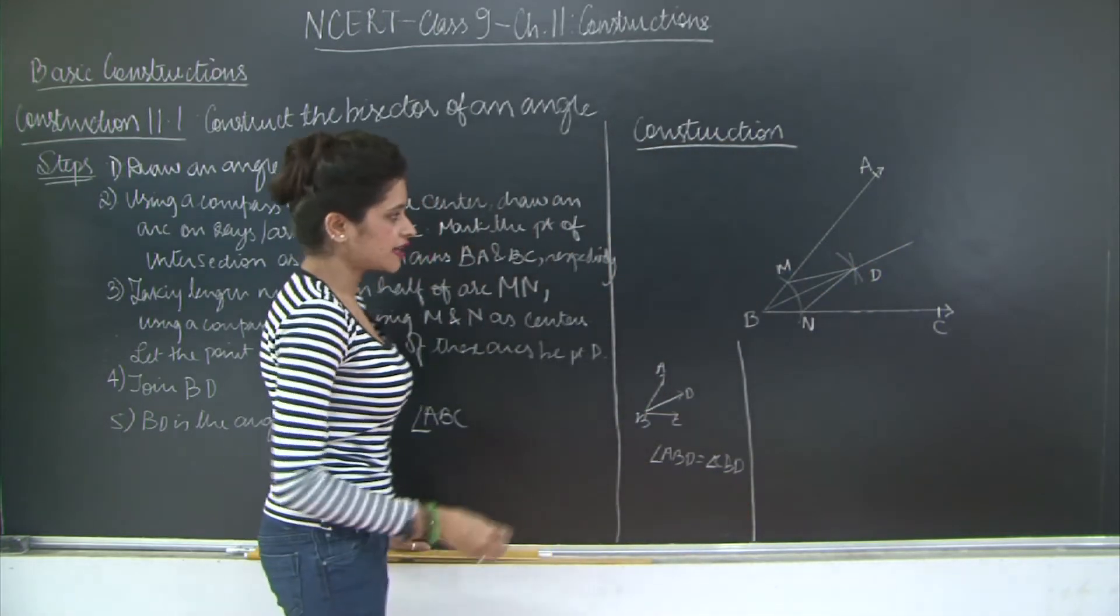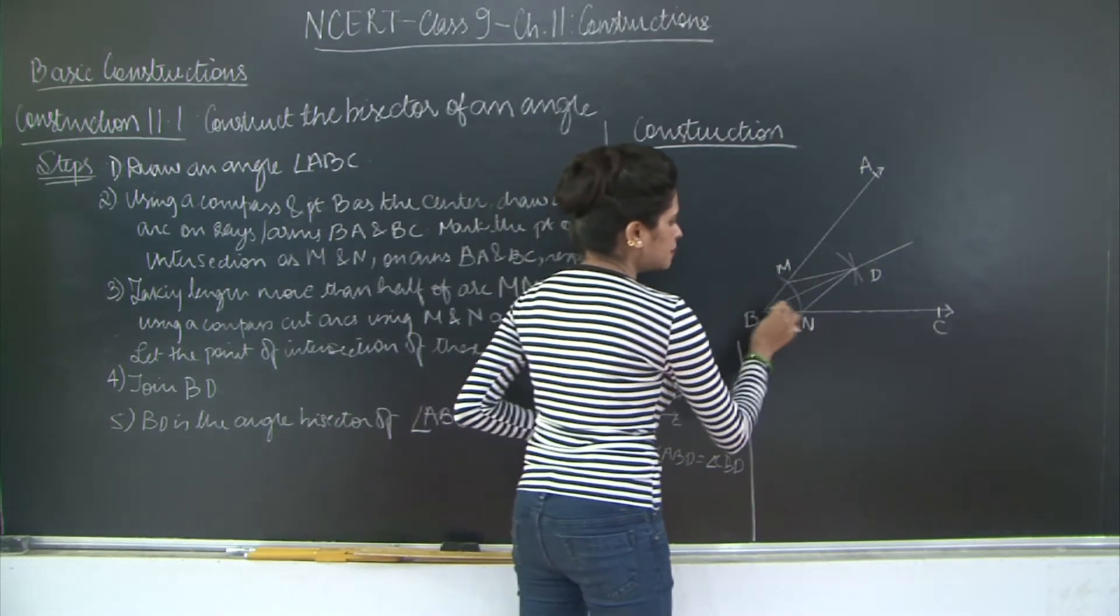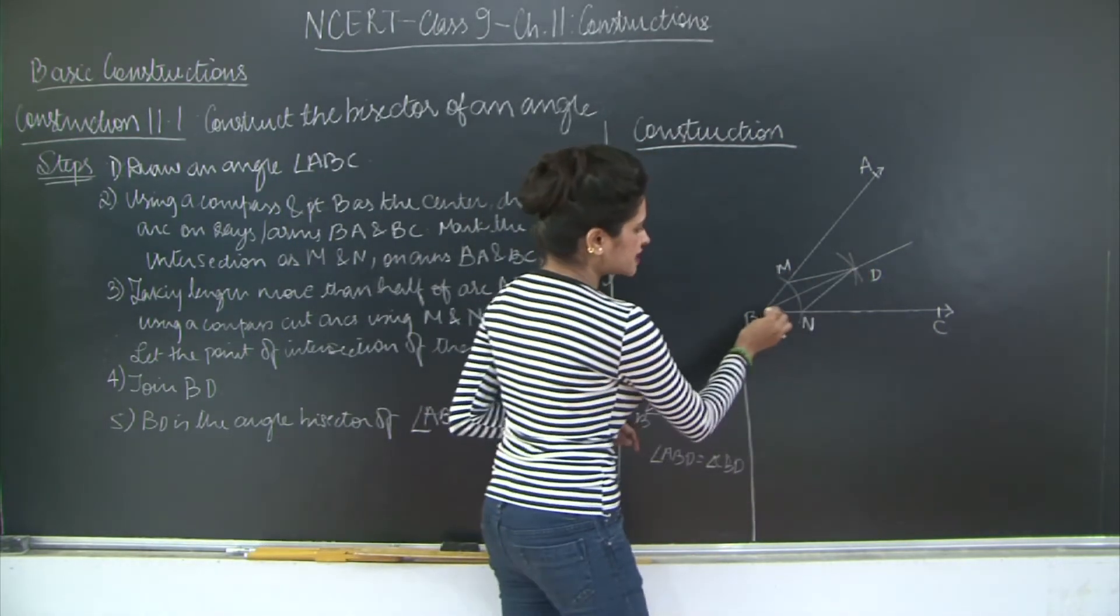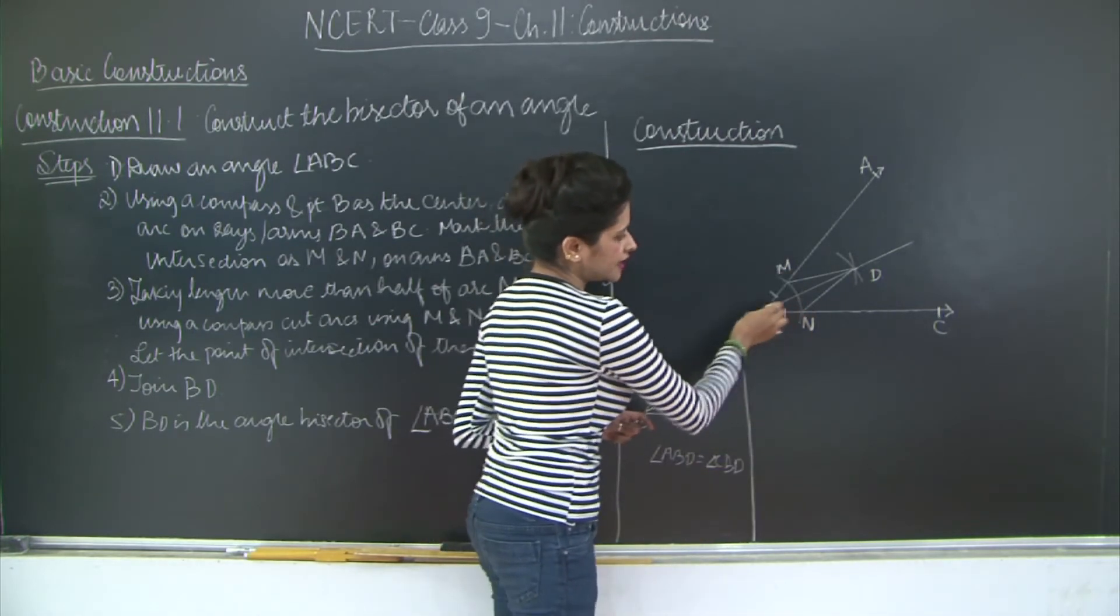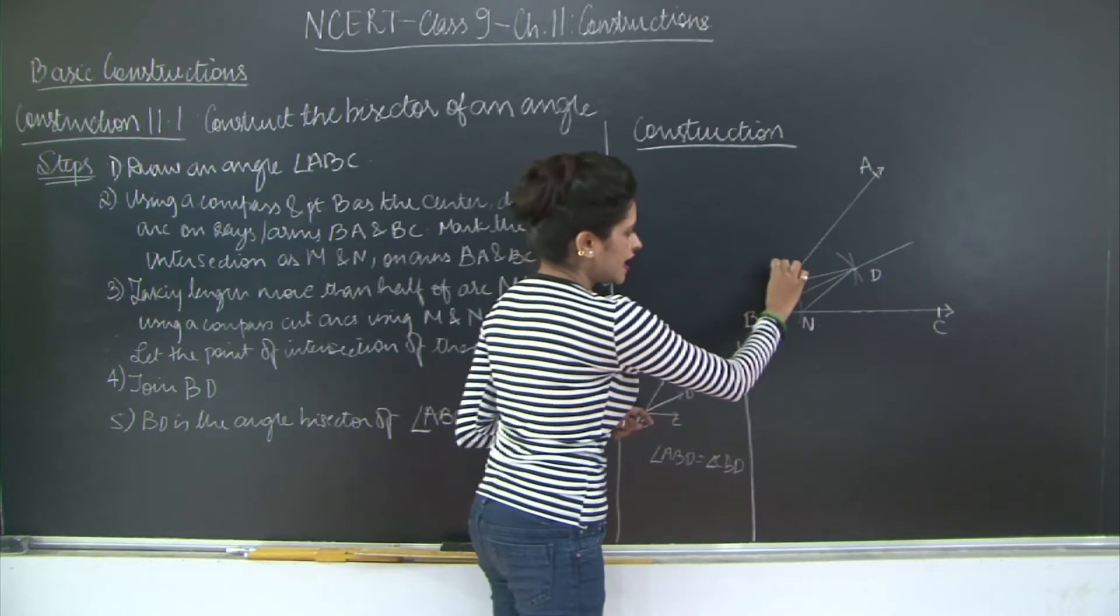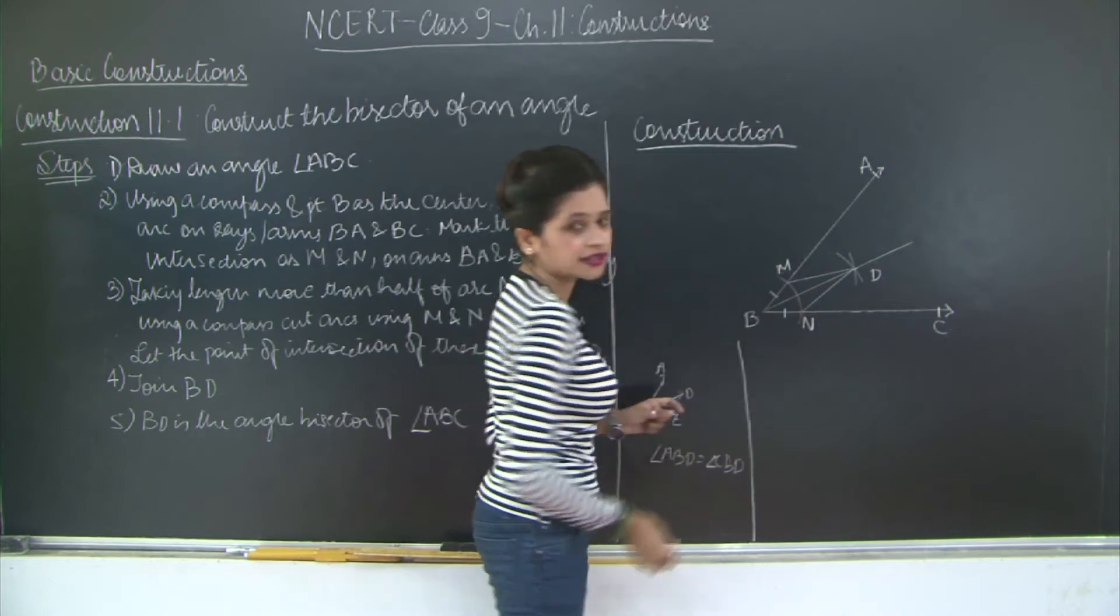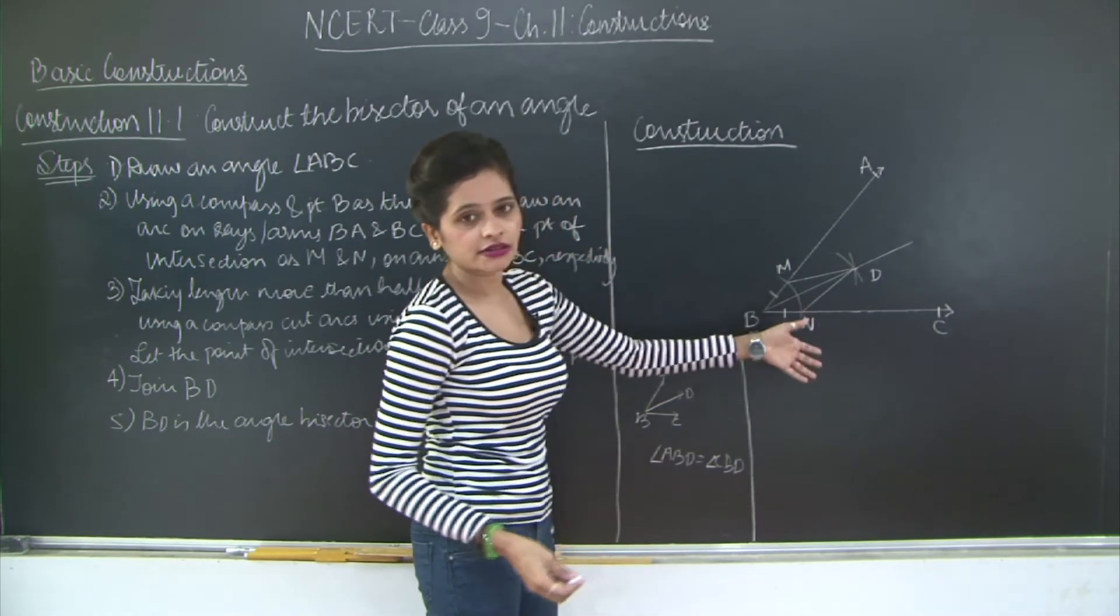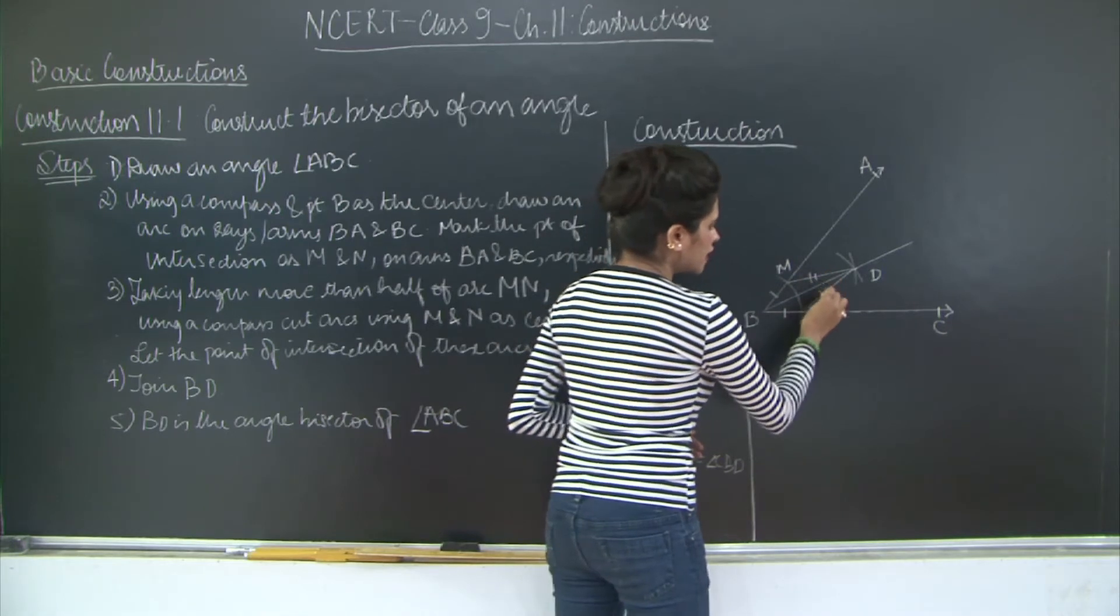So now if you take into consideration these two triangles BMD and BND, you will notice that BM is equal to BN because they are of the same radii. Right? Because this was the center and this was the circle that was drawn using B as the center. So these are of the same radii. So BM is equal to BN. Then you have MD is equal to ND.